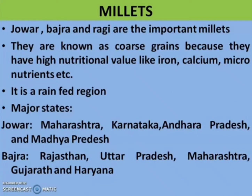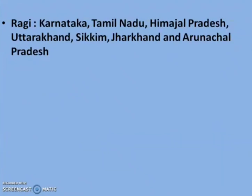Millets are also known as coarse grains because they have high nutritional value — containing iron, calcium, micronutrients, etc. They are rainfed crops. Major Jowar producing states are Maharashtra, Karnataka, Andhra Pradesh and Madhya Pradesh. Major Bajra producing states are Rajasthan, Uttar Pradesh, Maharashtra, Gujarat and Haryana. Ragi is grown in Karnataka, Tamil Nadu, Himachal Pradesh, Uttarakhand, Sikkim, Jharkhand and Arunachal Pradesh.